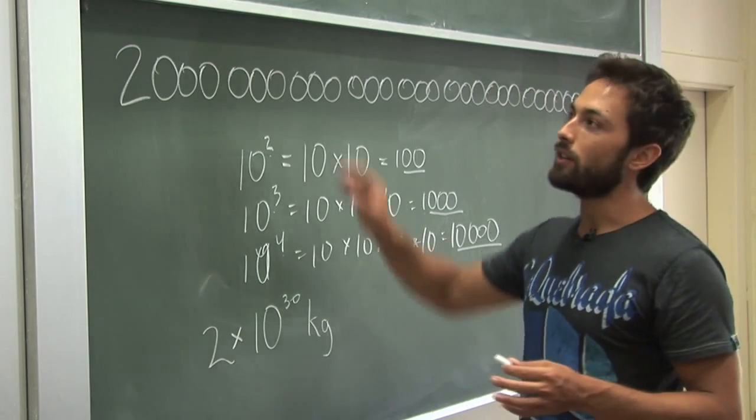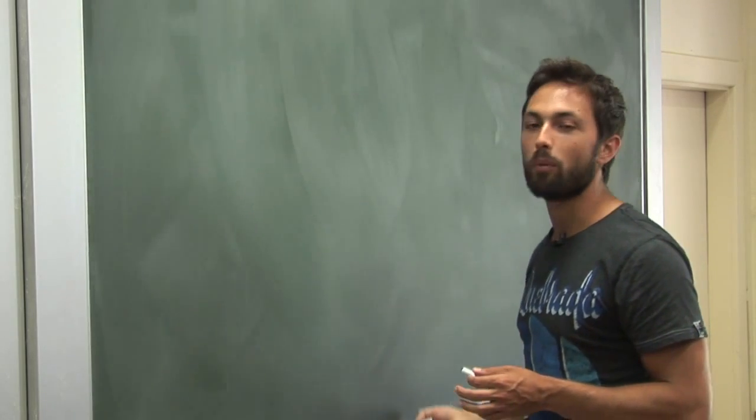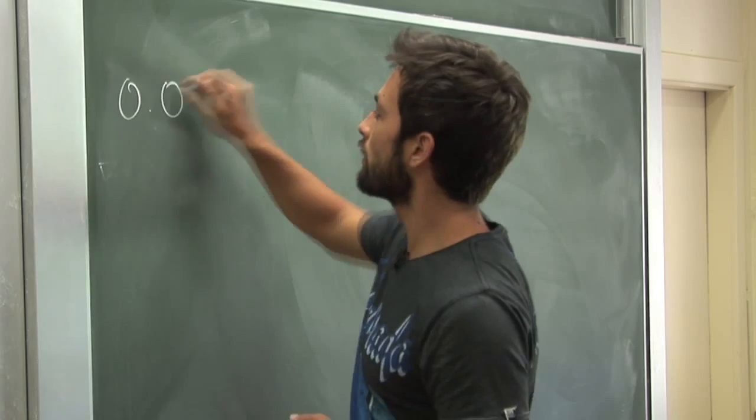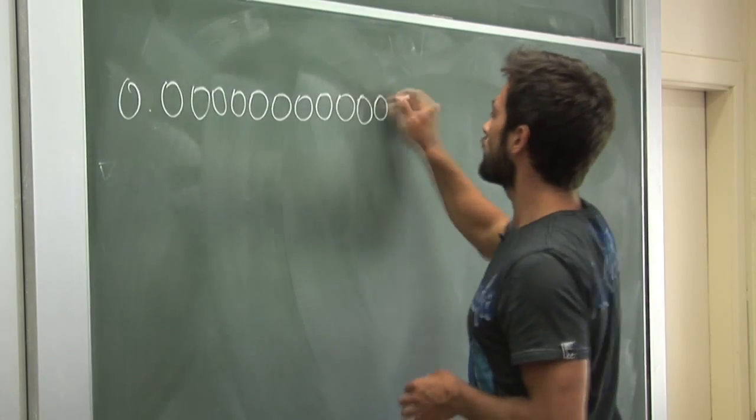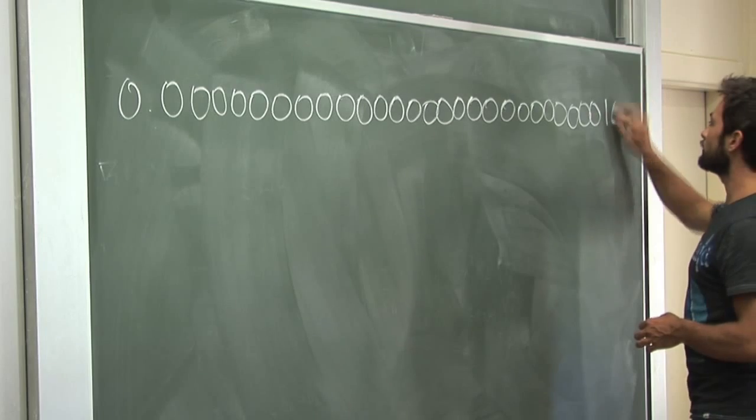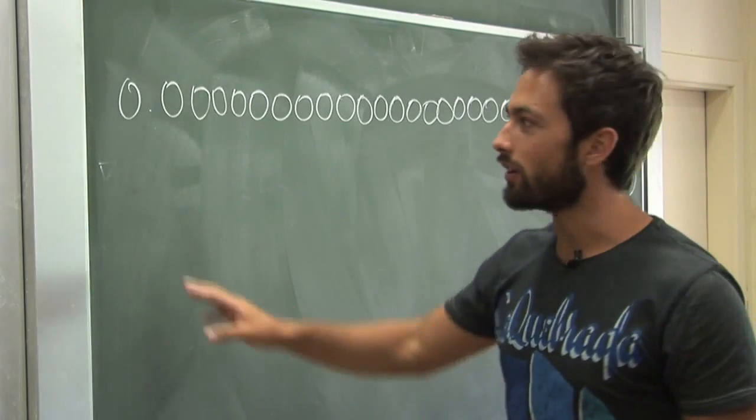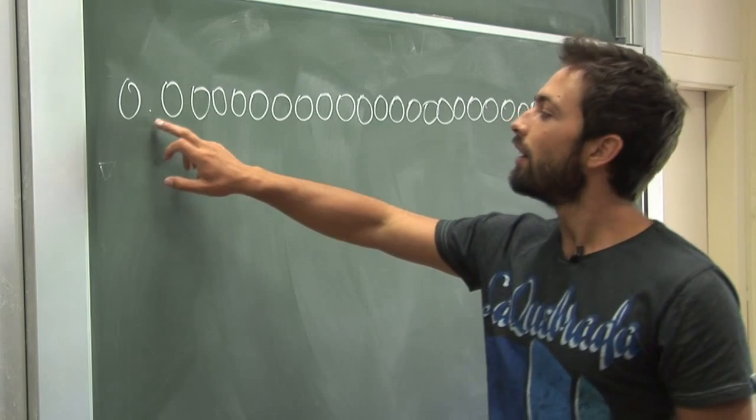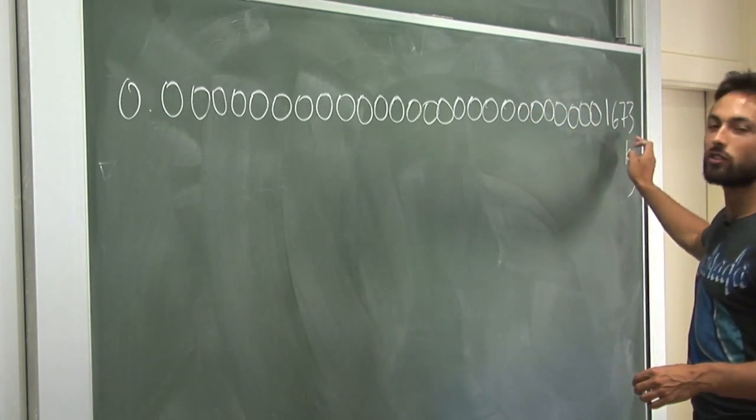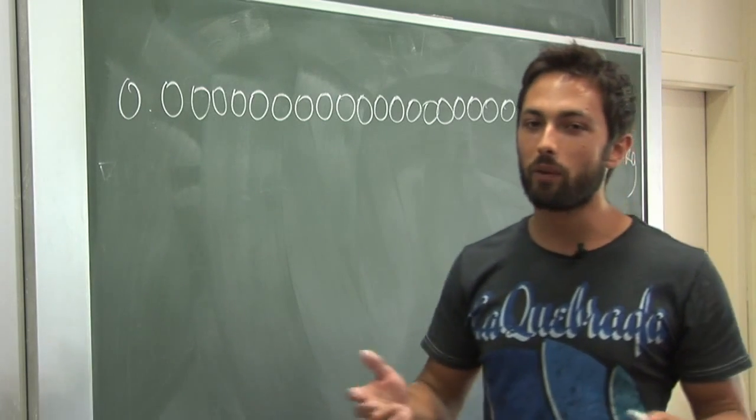The other problem is we have to deal with some very tiny numbers. For example, the mass of a proton is... that is the mass of a proton. Zero point, and then there's 26 zeros, and then 1673 kilograms. A truly tiny number. So how do we deal with this?